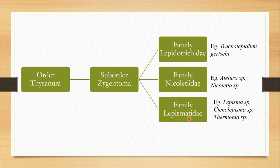Family Lepismatidae includes Lepisma species and Ctenolepisma species. These are better known as silverfish, and Thermobia species, which is also known as firebrat.